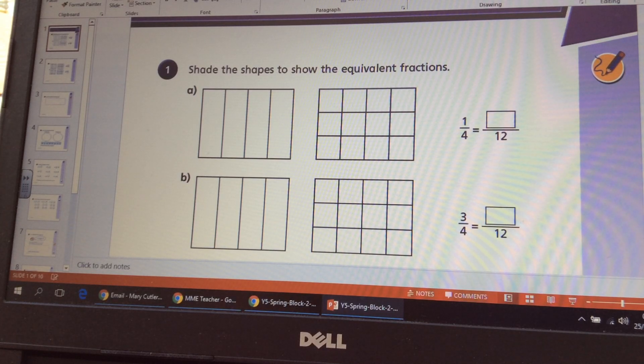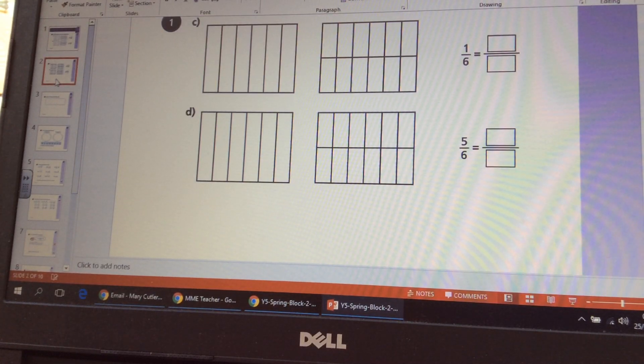The first question here, obviously you're being asked to shade in the different amounts to show the equivalents, and they've already divided them into equal sections for you so you know the fractions will be fair. The second lot of questions is very similar, so you're going to shade in one sixth and then you're looking at the visual size to see what would be equivalent to that amount.